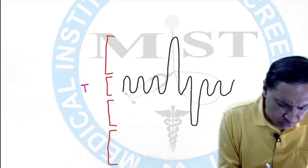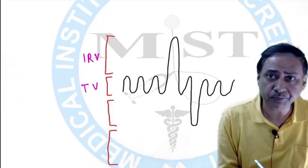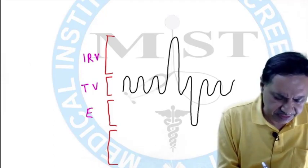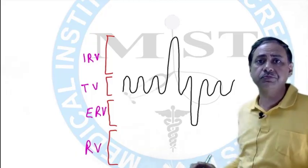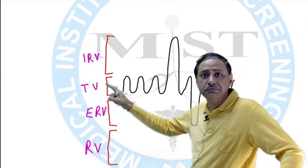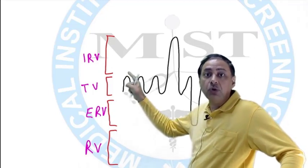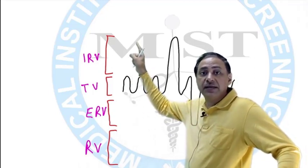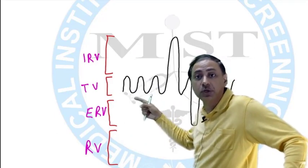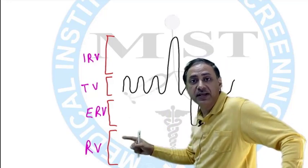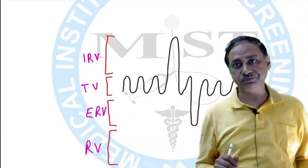So this is Tidal Volume, this is Inspiratory Reserve Volume, this is Expiratory Reserve Volume (ERV), and this is Residual Volume. Four volumes. Tidal Volume: normal in and normal out. Above that, how much you can inspire? Inspiratory Reserve Volume. Below that, how much you can expire over and above the normal tidal volume? Expiratory Reserve Volume. And the volume which is still present and can never be expired? That is the Residual Volume.